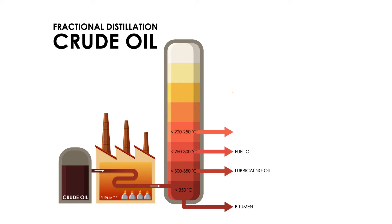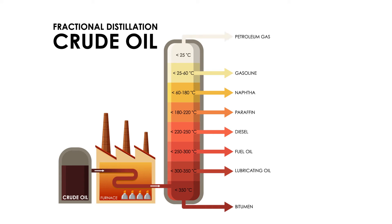Diesel condenses around 260 degrees, kerosene around 180 degrees, naphtha around 120 degrees, and petrol condenses around 60 degrees centigrade. The remaining gases are vented out from the top and are called liquid petroleum gas. Carbon content reduces as we move from asphalt to petroleum gas.